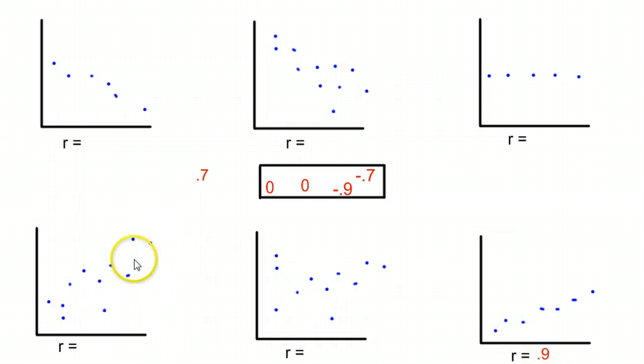This one here, definitely a linear pattern going on, but a lot more scattered. So when you have something that's very clearly forming some sort of line, but is kind of messy like that, 0.7 is probably in the right ballpark.